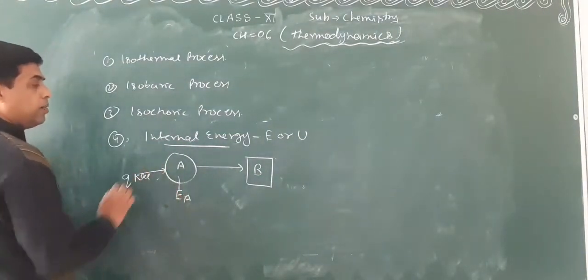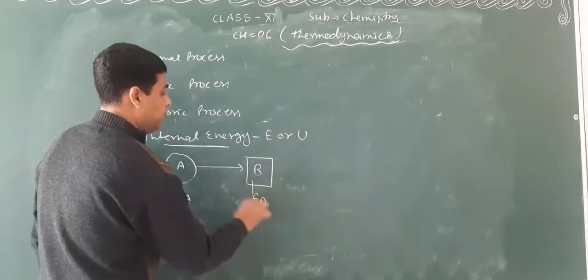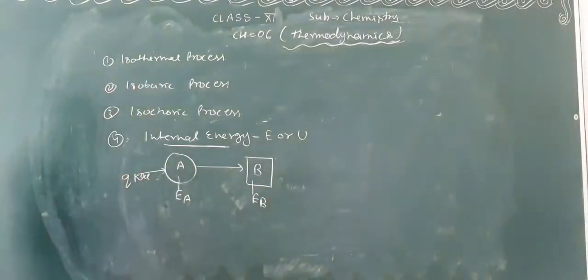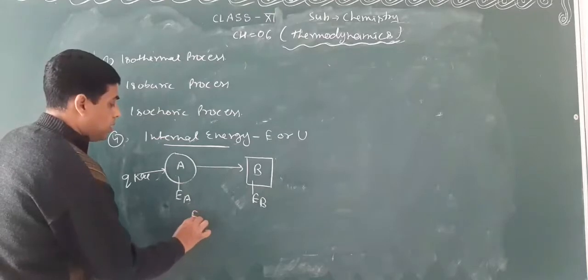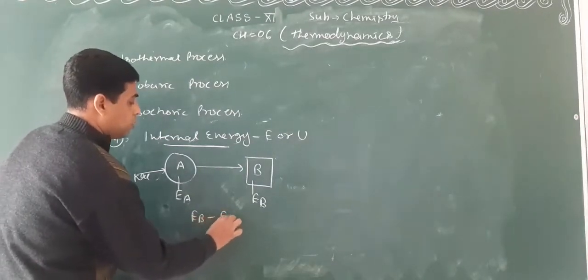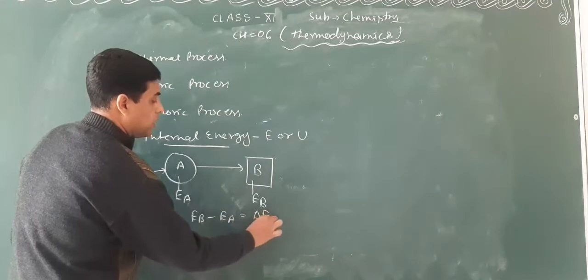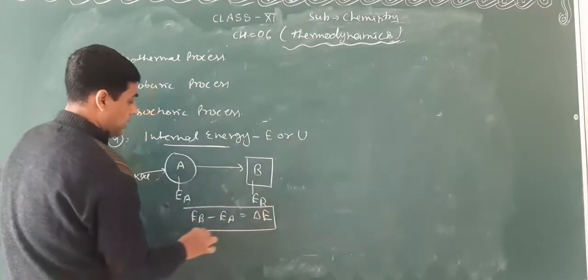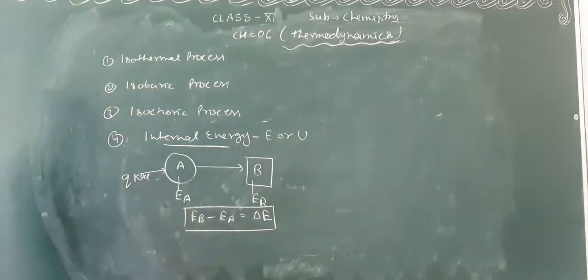So this is E sub A, the internal energy is E sub A. So how much change is E sub A? E sub A minus - then how much change in the internal energy? Delta E. This delta E is the change in internal energy.